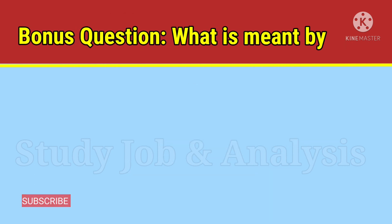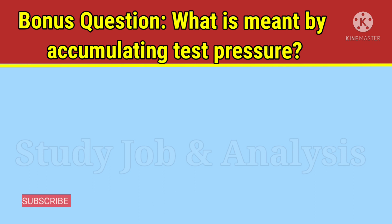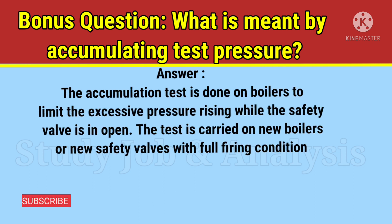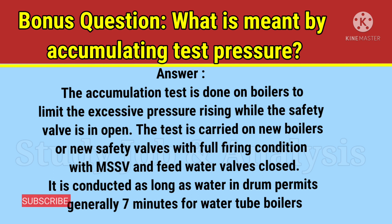Bonus question: what is meant by accumulation test pressure? Answer: The accumulation test is done on boilers to limit excessive pressure rising while the safety valve is open. The test is carried out on new boilers or new safety valves under full firing conditions with the main steam stop valve and feed water valves closed. It is conducted as long as water in the drum permits — generally seven minutes for water tube boilers.